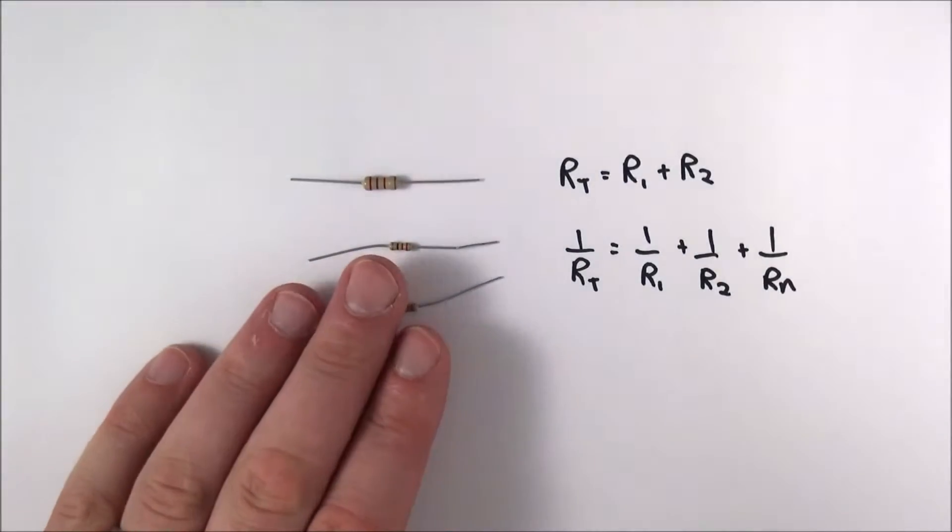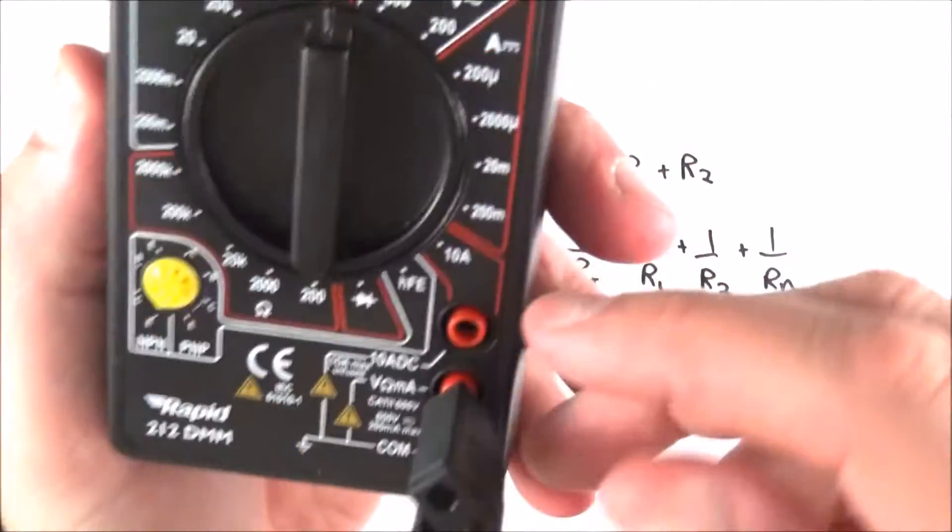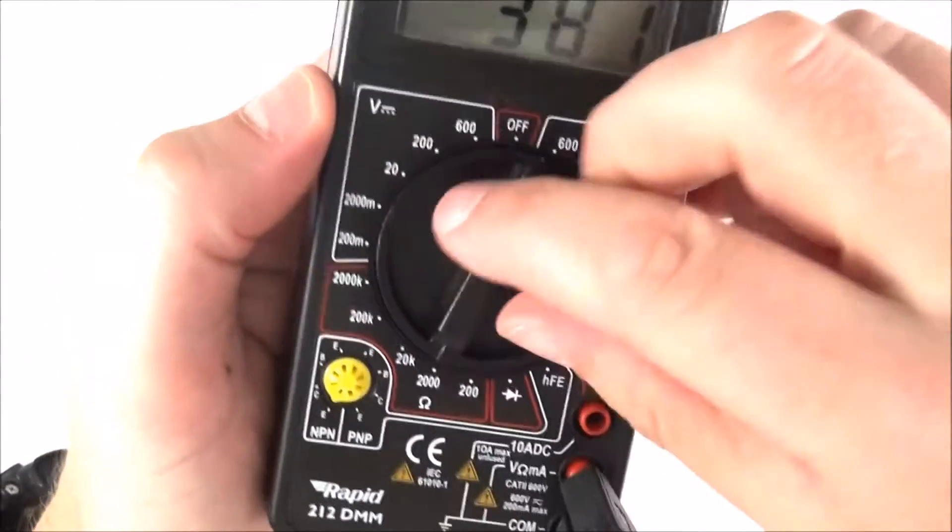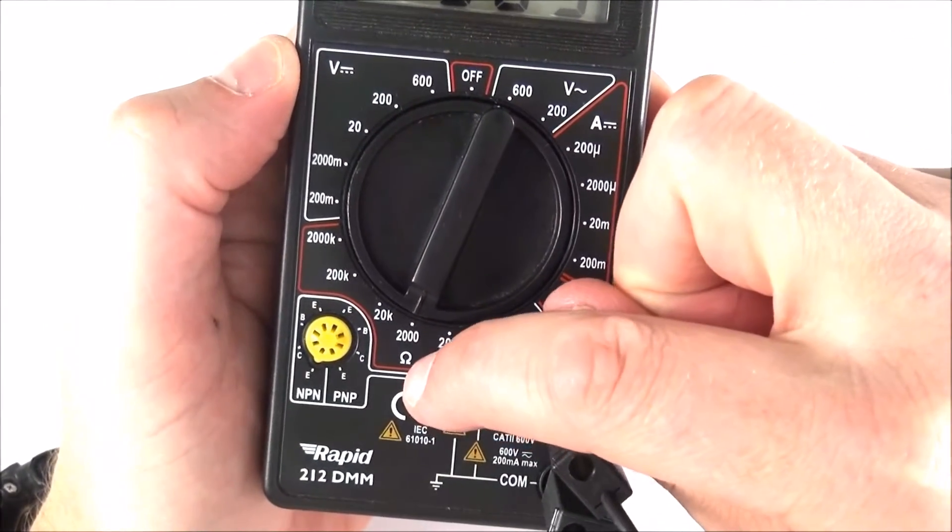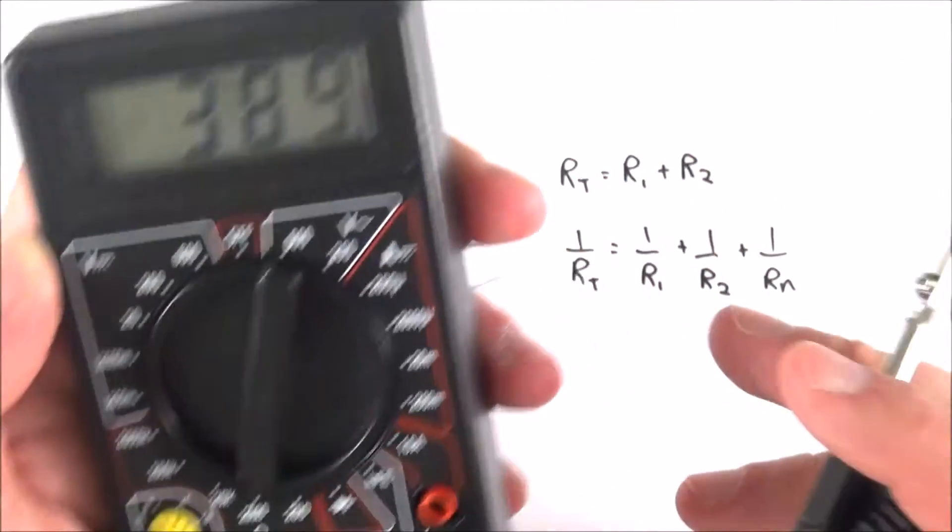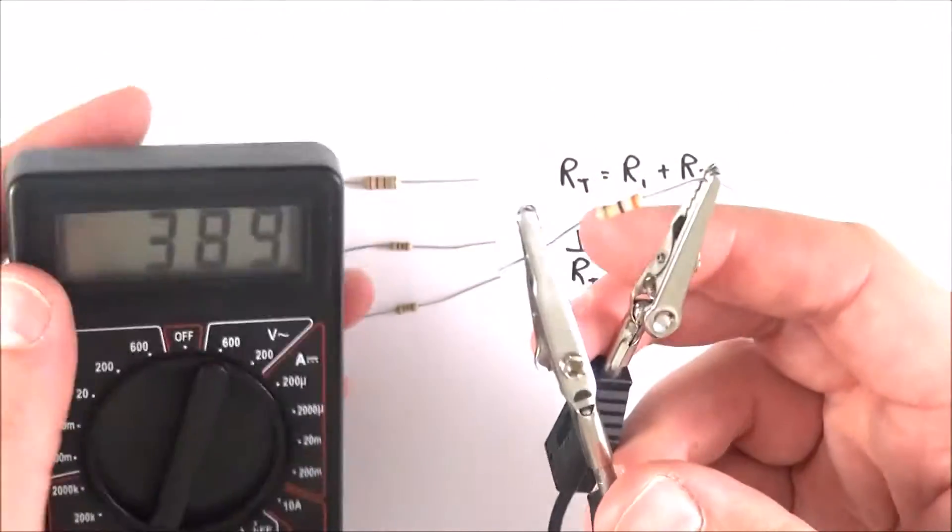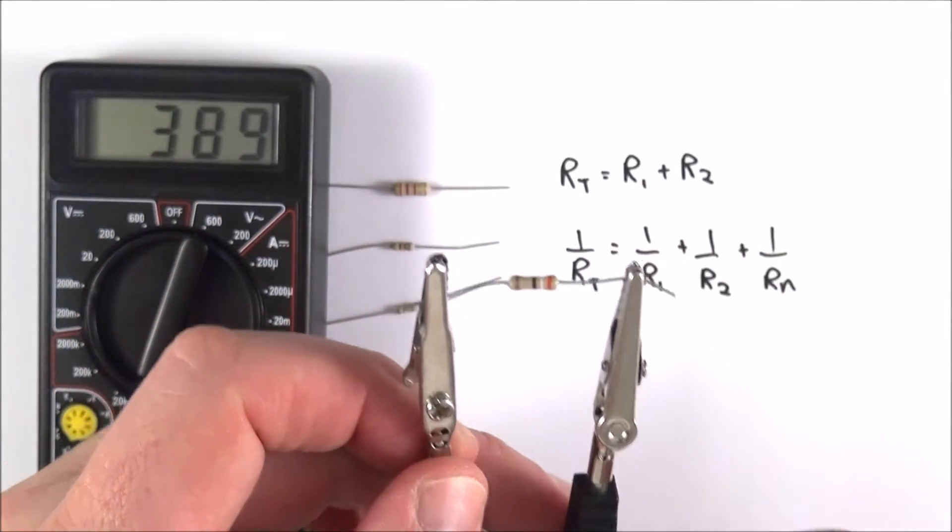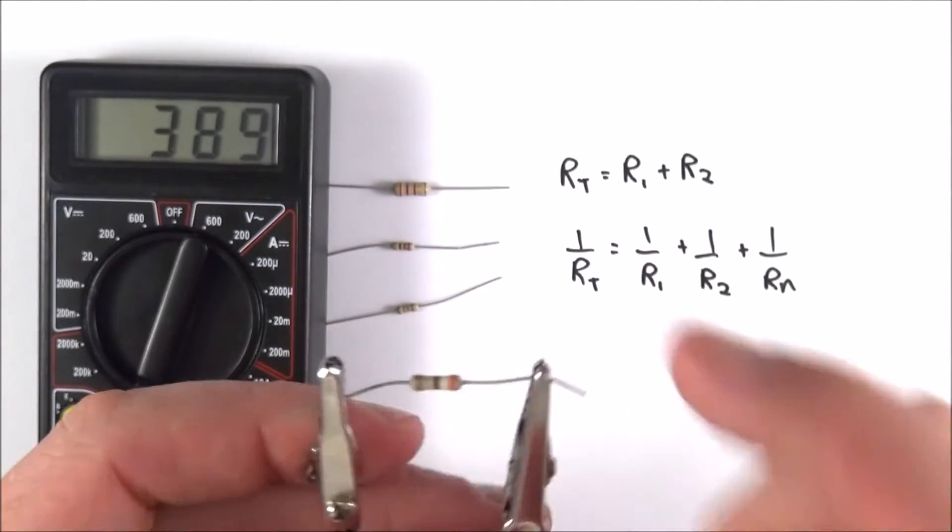What you can then do is use a multimeter as an ohm meter. So this multimeter here, pretty standard equipment, all I need to do is turn it round to the ohm symbol down here. This is going to measure my resistance directly. What you can then do is use a couple of leads with crocodile clips to just put that across the end of a resistor, and that will tell you the actual resistance of that.